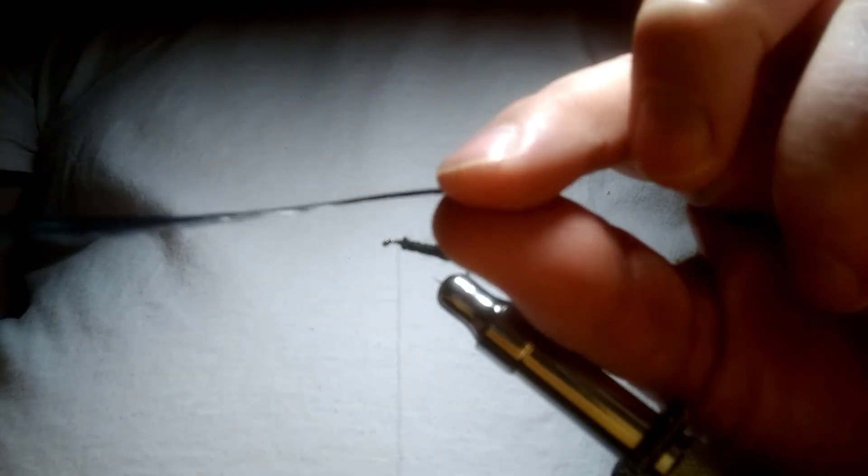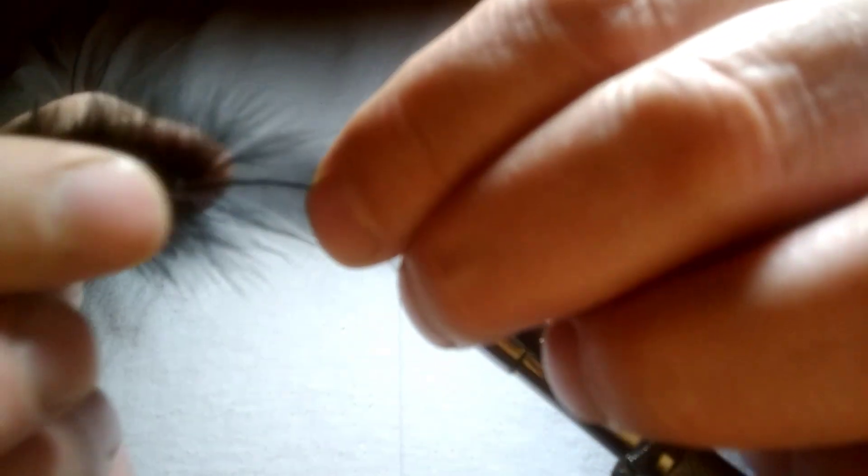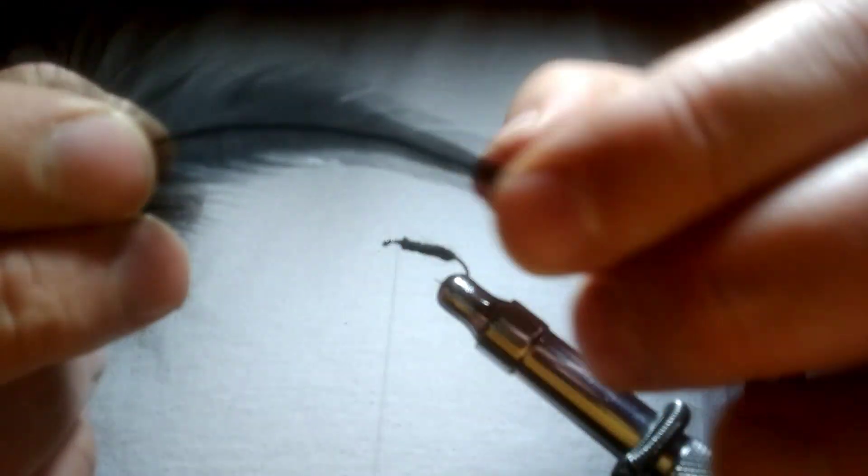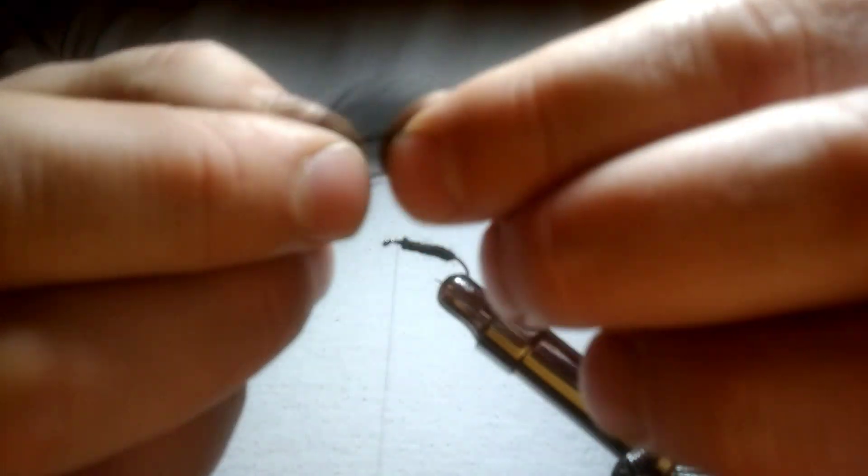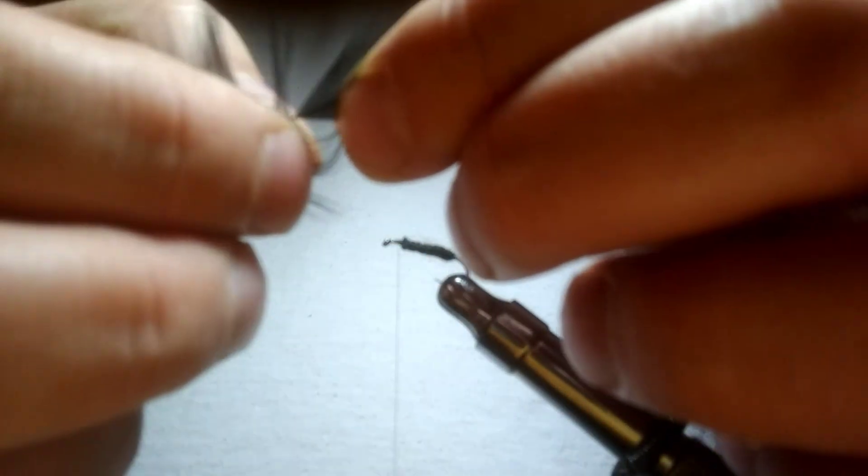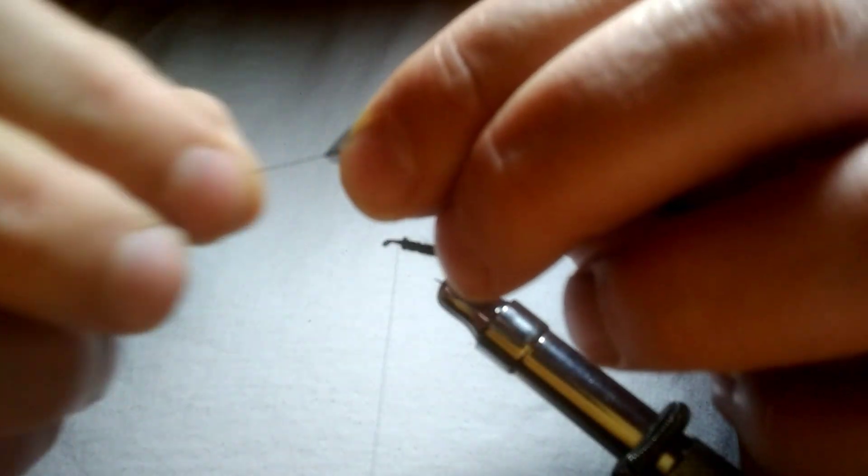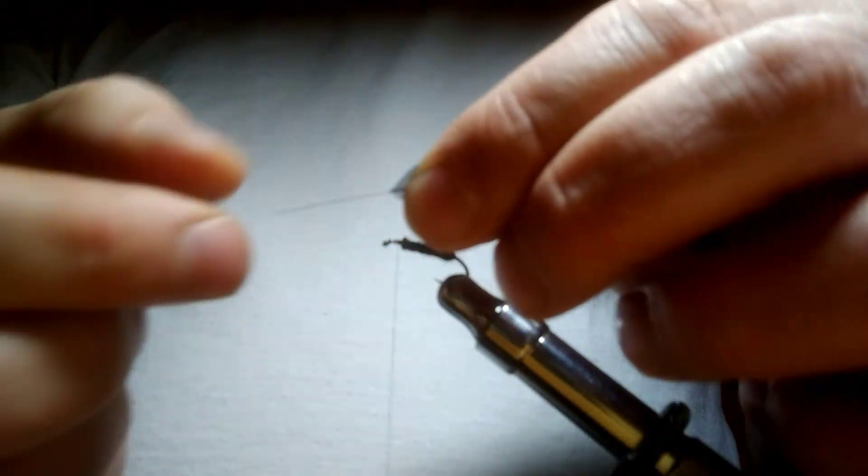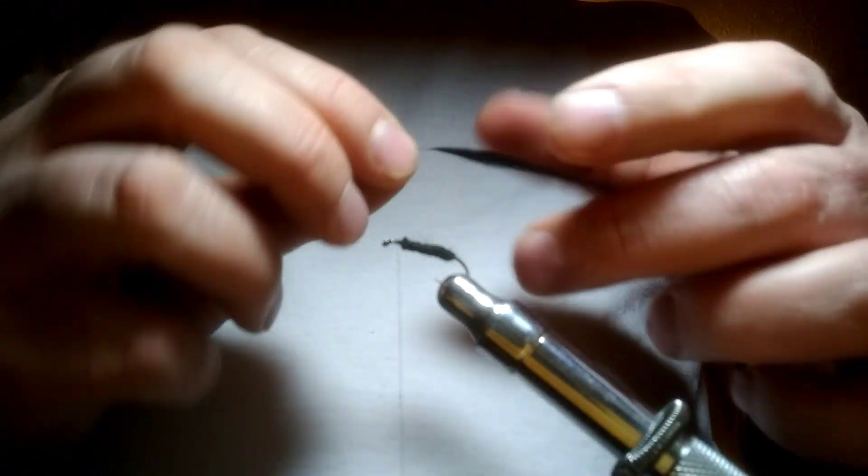Next step, take your saddle hackle and you see it's really thick here and fluffy at the end. We don't want any of that. We want a bit of thinner hair, so I'm going to strip off the feather from here down. I got a nice part of the stem here and the stem is going to get tied in.